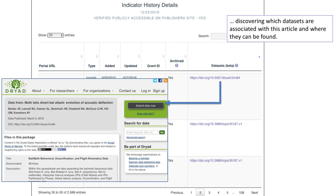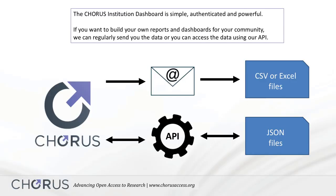The CORUS Institution Dashboard helps you discover which datasets are associated with this article and where they can be found. The Dashboard is simple, automated, and powerful. If you want to build your own reports and dashboards for your community, we can regularly send you the data, or you can access the data using our API.